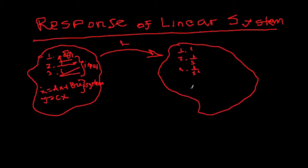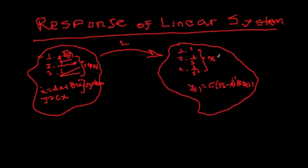For the system we will have that Y(s) is equal to C(sI - A)⁻¹ B U(s), assuming that this system has zero initial conditions. Therefore, once we combine U(s) — any of these inputs — with the transfer function G(s) of the system, we will have that U(s) multiplied by G(s) will provide the desired output.